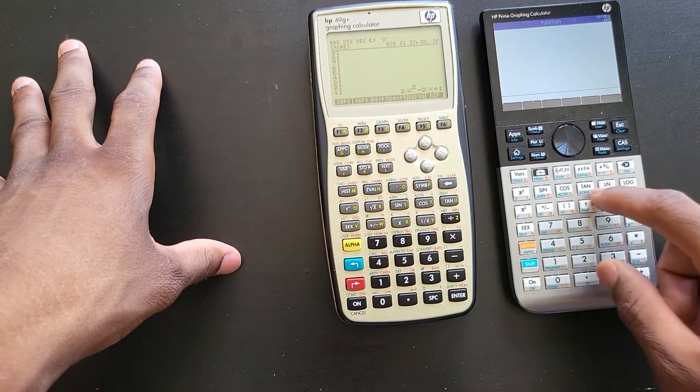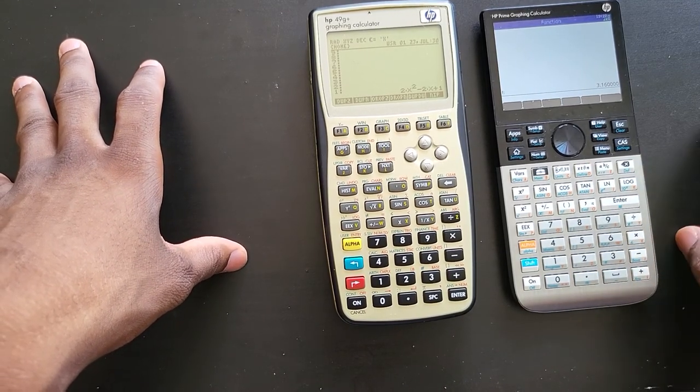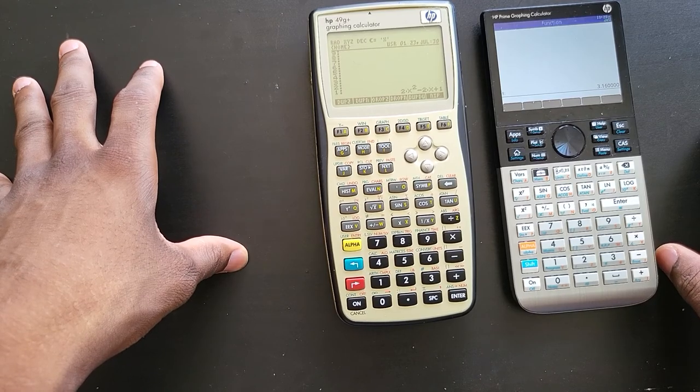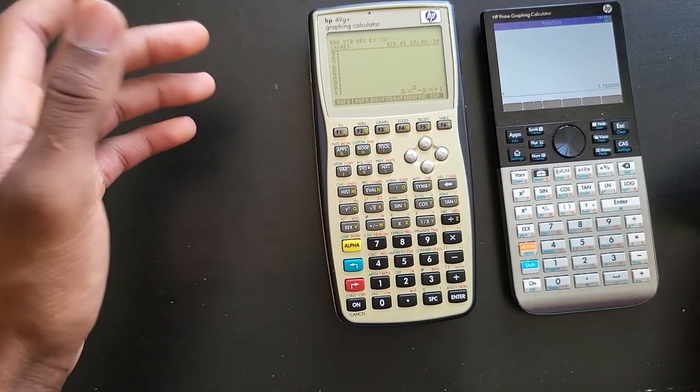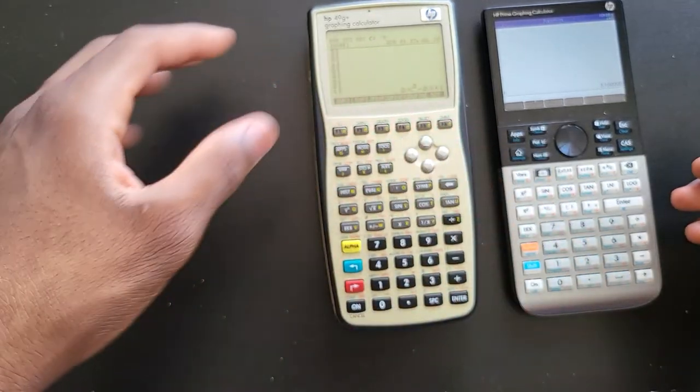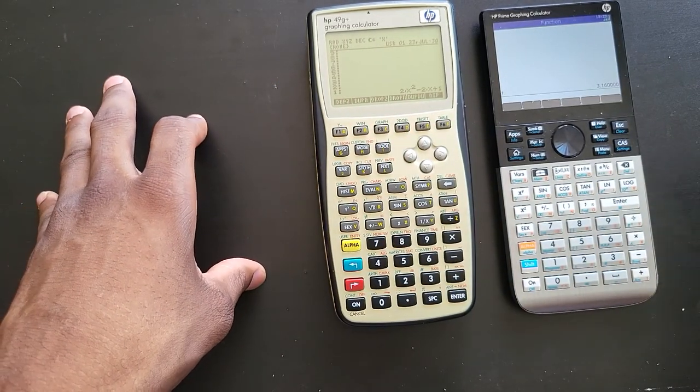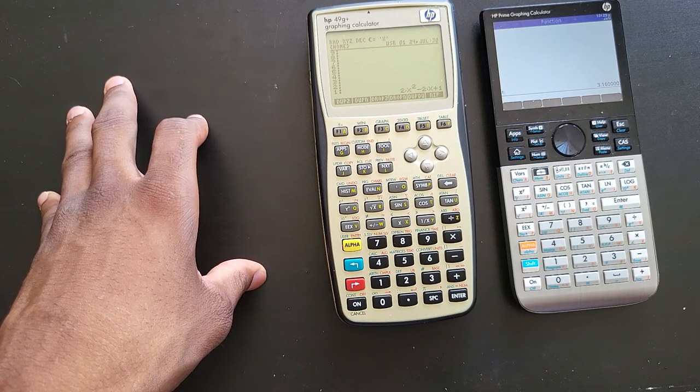For some reason it's giving me a value for X which is 3.16, and I am pretty sure I have not done anything to this calculator which will make the X default to 3.166. To prove my point, I'm gonna pull up the HP app.